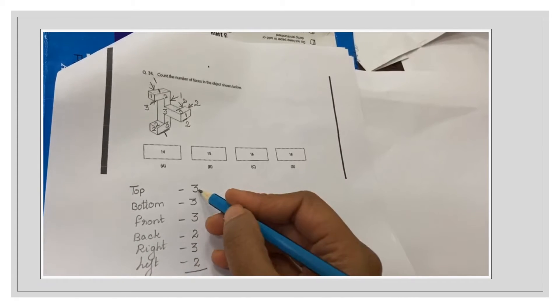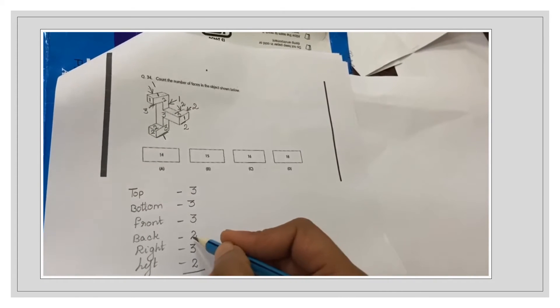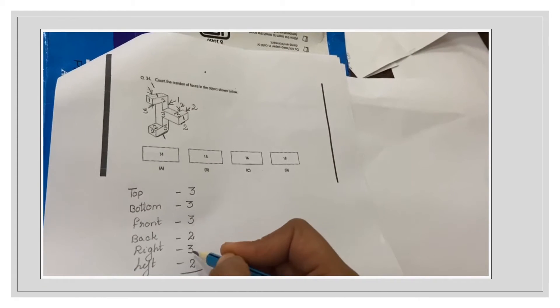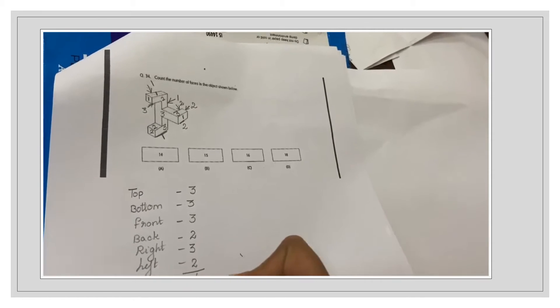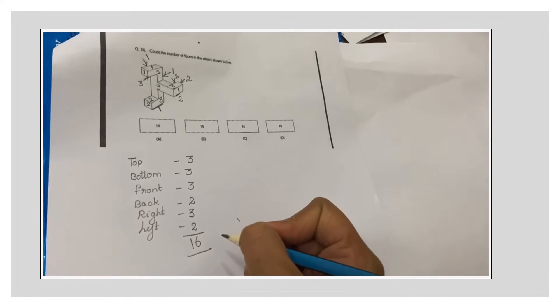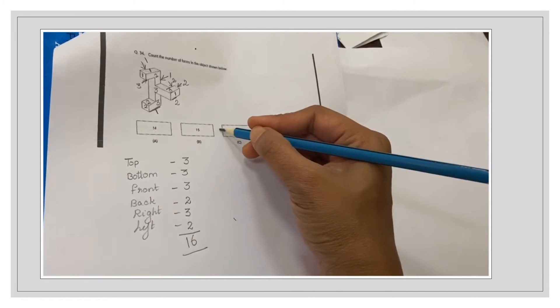Total: 3, 6, 9, 11, 14, 16. So option C.